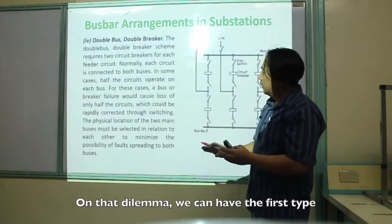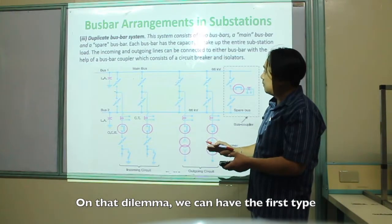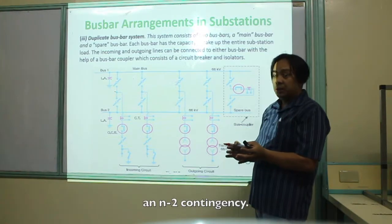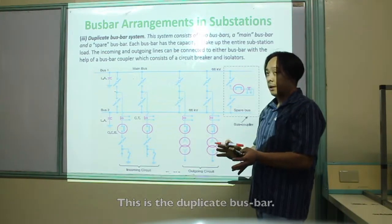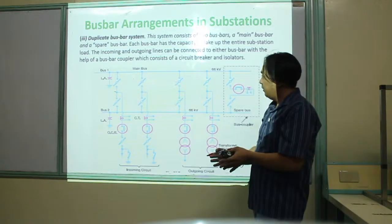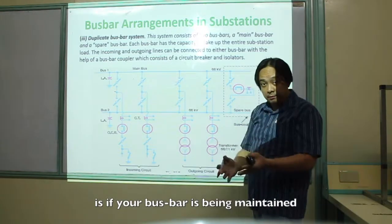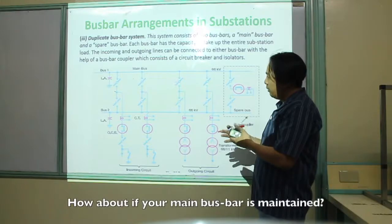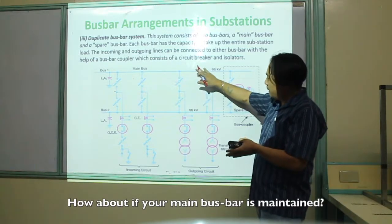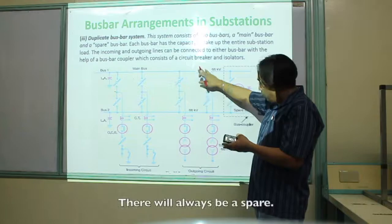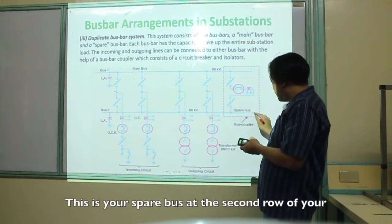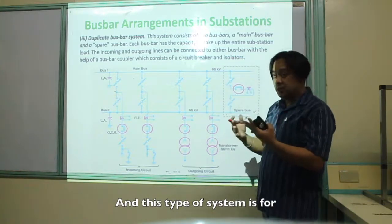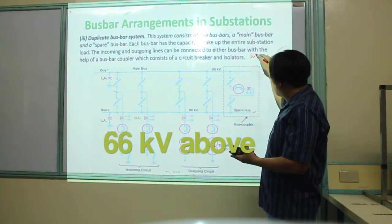For N-2 contingency, we have the duplicate bus bar. The problem with the first two types is that if your bus bar is faulted or being maintained, there is a complete interruption. With the duplicate bus bar, if your main bus bar is being maintained, there is always a spare — a spare bus at the second row of your power system. This type of system is for 66 kV and above.